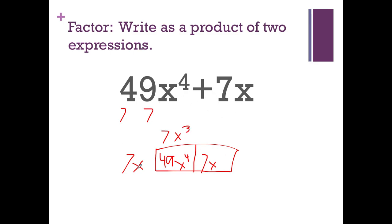Now for 7x, 7 times 1 is 7, and x times 1 is x. So this is just going to be just 1. Oh, perfect. So then I can write my final answer as 7x, parentheses. Don't forget your parentheses, and times 7x cubed plus 1. Okay, not too bad.